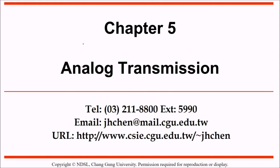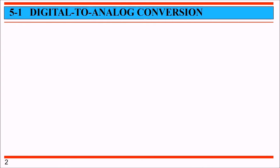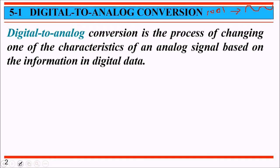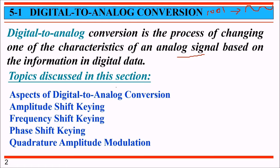Today we will talk about analog transmission, specifically digital to analog conversion - where digital data like 1001 needs to be converted into analog or sine wave-like signals. The digital to analog conversion is the process of changing one of the characteristics of an analog signal based on the information in digital data. We will cover amplitude shift keying (ASK), frequency shift keying (FSK), phase shift keying (PSK), and quadrature amplitude modulation (QAM).